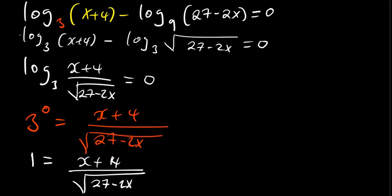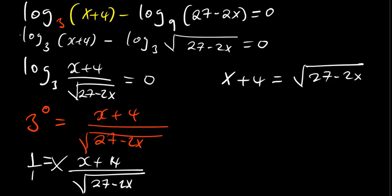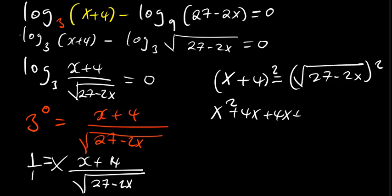So now we can cross multiply. That becomes x + 4 equals √(27 − 2x), because there is also 1 on the left side. To get rid of the square root I have to square both sides. Squaring the left side: x times x is x², x times 4 is 4x, 4 times x is 4x, 4 times 4 is 16. On the right side the square root and the square cancel, leaving 27 − 2x.